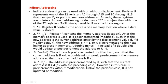With *R++, register R contains the memory address location. After the memory address is used, R is post-incremented such that the new address is the current address offset by the displacement value D. The value in D specifies how many memory locations register R is displaced. If D equals 1, which is the default, the new address is R plus 1, or R is incremented to the next highest address in memory.